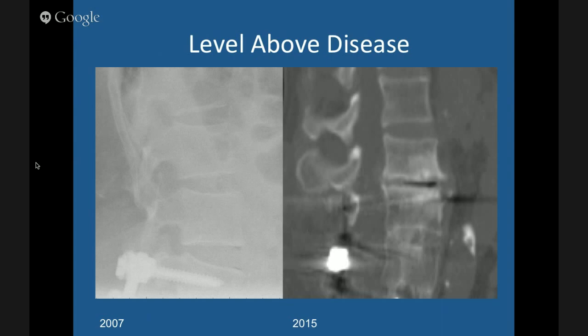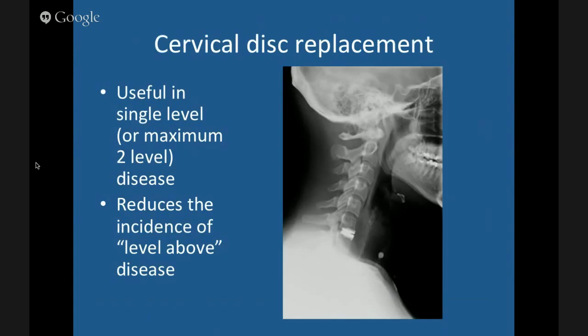To prevent or decrease level-above disease, people do cervical disc replacements. This is only indicated for single-level or at most two-level disease. By going in and placing a disc replacement, you don't fuse the spine — you preserve mobility and don't put stresses on the disc above. It's not that commonly performed but is getting more popular. The limitation is it can only be done for one or at most two levels of disease.